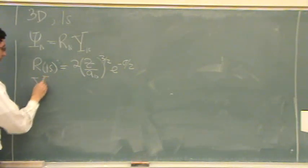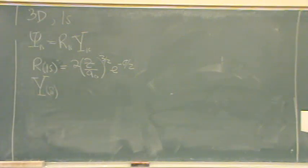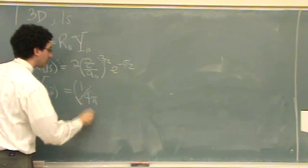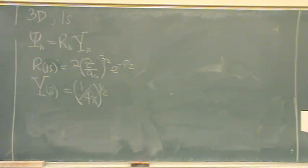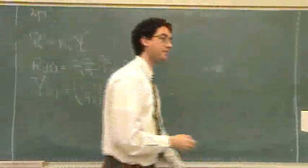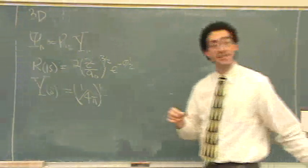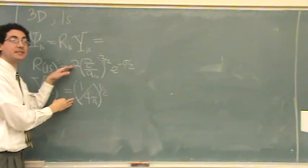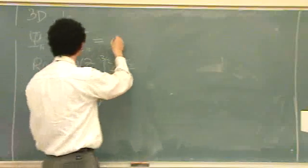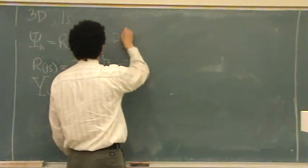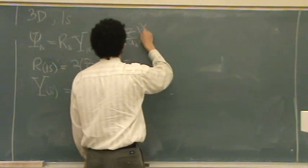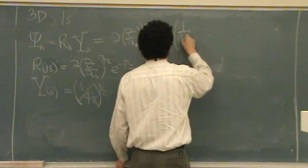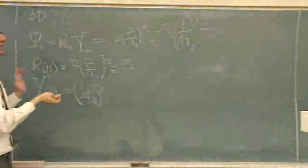So then the Y1 is also in the table. It doesn't list the N, it only lists the L values. And that's 1 over 4 pi to the 1 half. Let me write this first. I'm just going to put these next to each other and write a multiplication sign in the middle. 2Z over A to the 3 halves, e to the minus sigma over 2. This is the function. Assuming that I copied it right, that's the wave function.